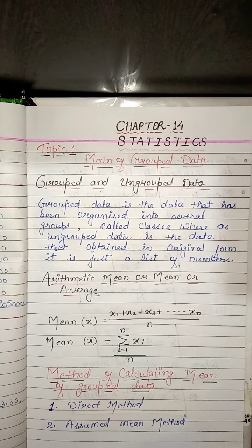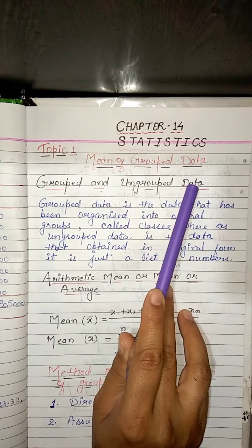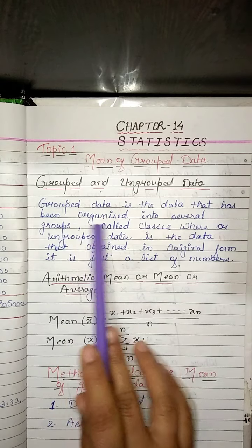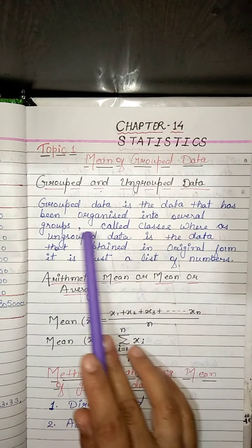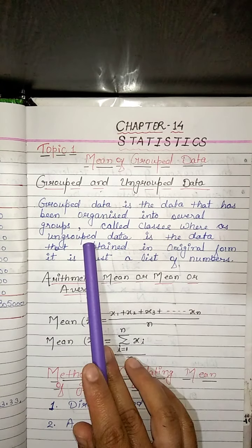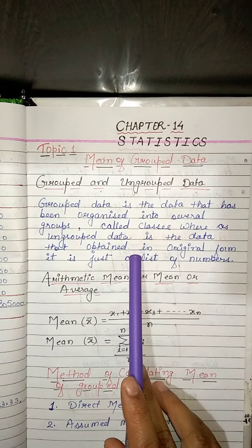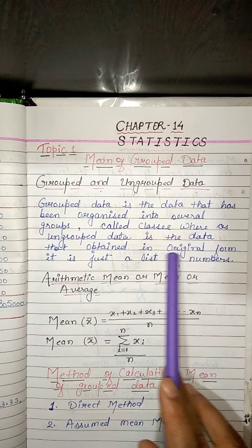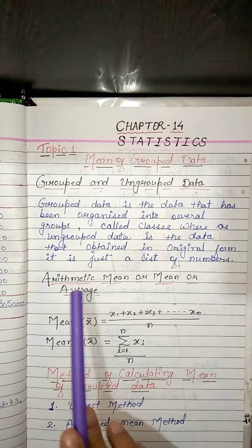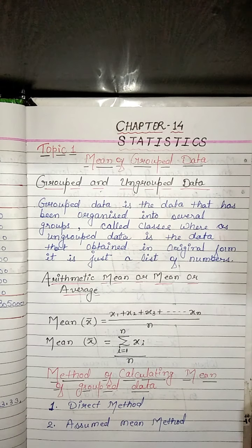First, we discuss Topic 1: mean of grouped data. Grouped data is the data that has been organized into several groups called classes. Whereas ungrouped data is the data obtained in its original form — it is just a list of numbers.